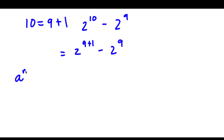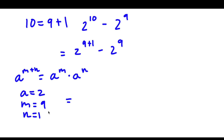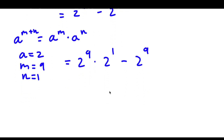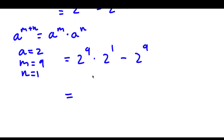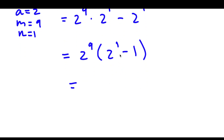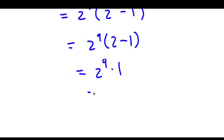If I have something in the form a to the power of m plus n, this is equal to a to the power of m times a to the power of n. So 2 to the power of 9 plus 1 — in this case a would be 2, m would be 9, and n would be 1 — gives 2 to the power of 9 times 2 to the power of 1, minus 2 to the power of 9. Because both terms have 2 to the power of 9, I can factor it out. 2 to the power of 1 divided gives simply 2 to the power of 1, and minus 2 to the power of 9 divided by 2 to the power of 9 is 1. So I have 2 to the power of 9 times 2 minus 1, which equals 2 to the power of 9 times 1, which is 2 to the power of 9.